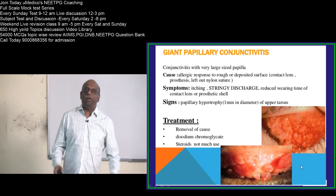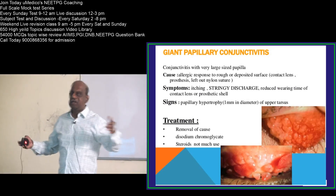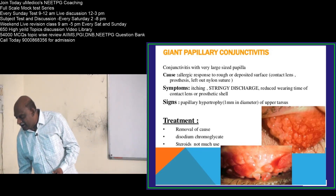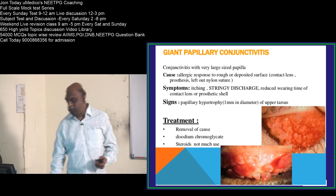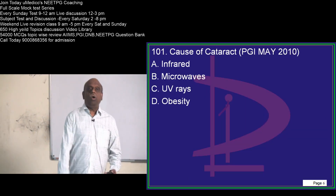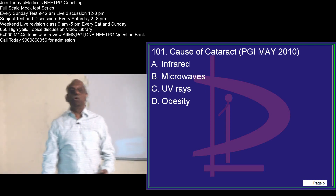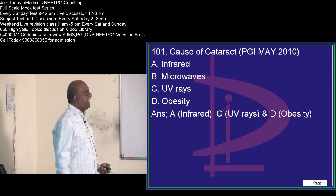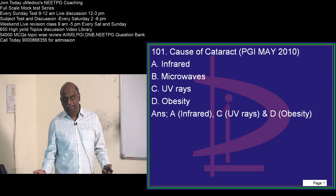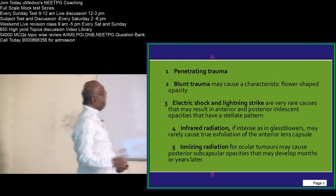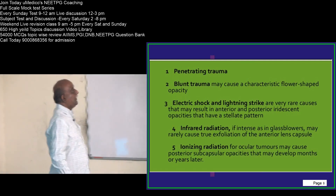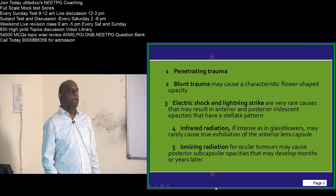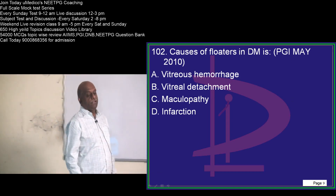You should know the different forms of allergic keratoconjunctivitis — vernal conjunctivitis, giant papillary conjunctivitis, etc. Regarding the causes of cataract, there are many: infrared rays, UV rays, obesity, penetrating trauma, blunt trauma, electric shock, infrared radiation, ionizing radiation — anything can be responsible, and you need to be doubly sure about that.